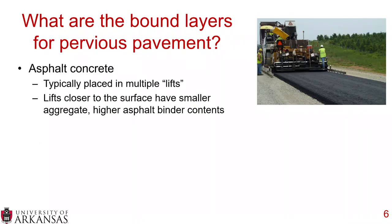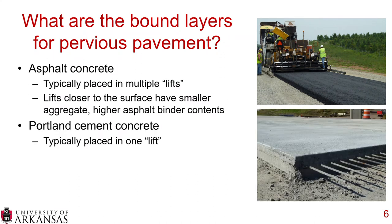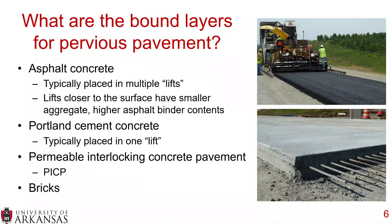There are three typical bound layers used for pervious pavement. The first is asphalt concrete, typically placed in multiple lifts, with lifts closer to the surface usually having smaller aggregate and higher asphalt binder contents. We have Portland cement concrete, typically placed in one single thick lift. And we also have permeable interlocking concrete pavement — PICP — and bricks.